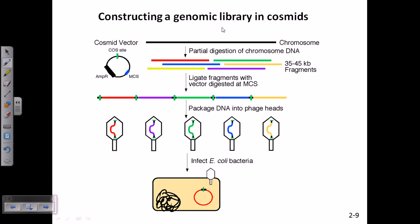Now, construction of a genomic library in cosmids. Cosmids are a little bit different. They are modified vectors. As you can see here, this is a cosmid vector.